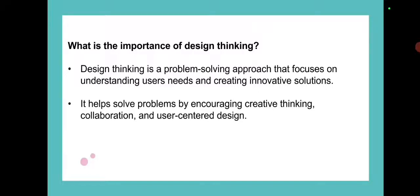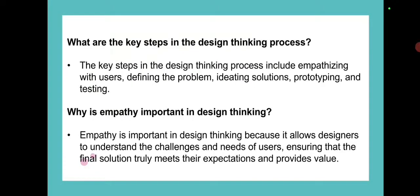What are the key steps in the design thinking process? The design thinking process has five key steps. Number one is Empathize — that means understanding the problem. Number two is Define — that means clearly defining the problem, to state the problem clearly.